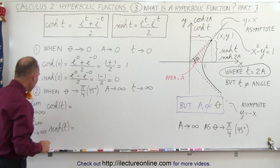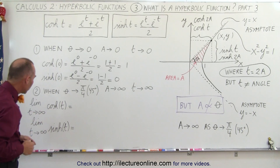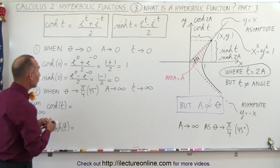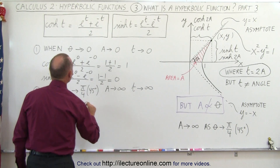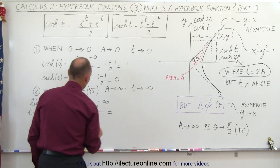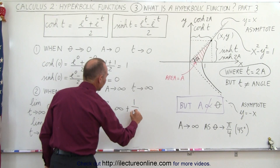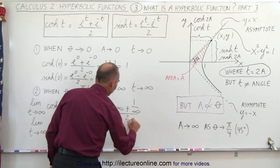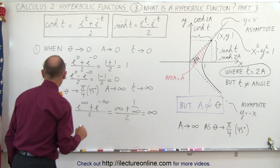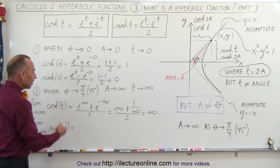When we plug in t going to infinity, what is the hyperbolic cosine of t? This becomes e to the infinity plus e to the minus infinity, divided by 2, which is essentially infinity plus 1 over e to the infinity — which is 1 over infinity — all divided by 2. Since 1 divided by infinity is 0, we get infinity divided by 2, which is still infinity. In other words, when t becomes infinite, the hyperbolic cosine becomes infinite as well.